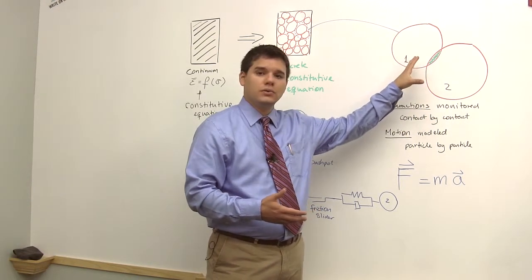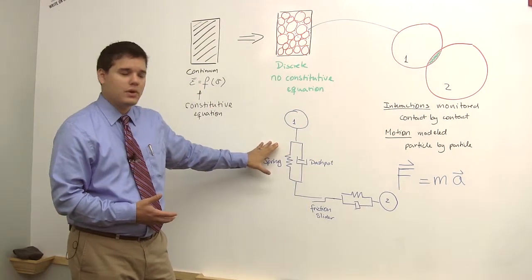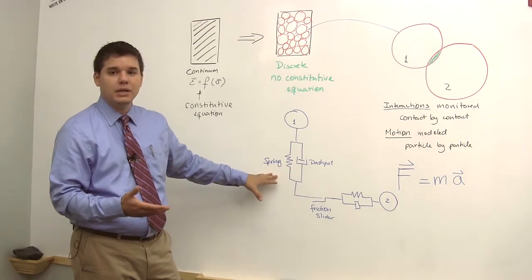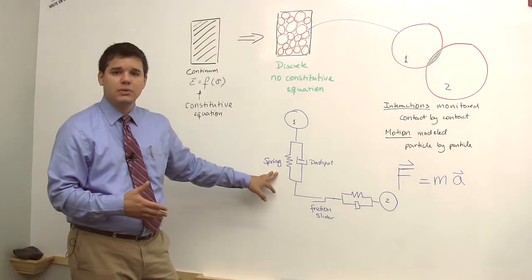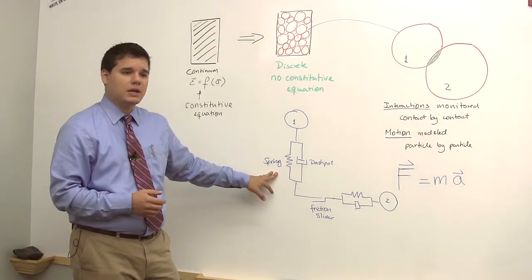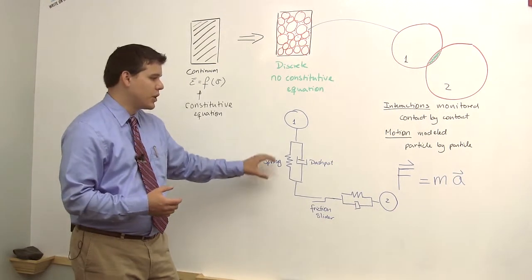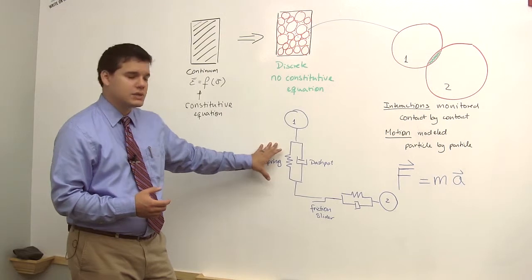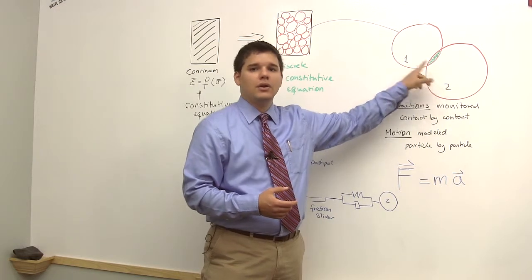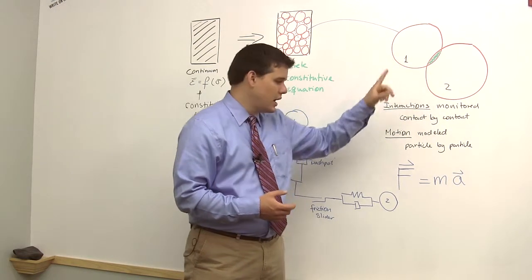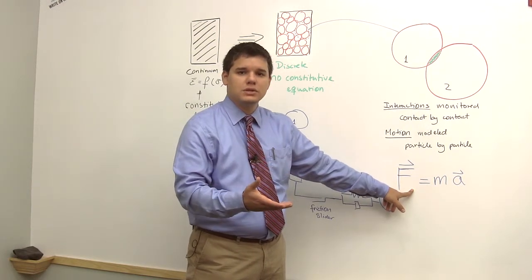The forces applied to each particle are modeled usually by a set of springs and dashpots. These springs and dashpots can take many different shapes — it could be a linear spring, it could be a non-linear spring, or it could be a hysteretic spring where it has a different stiffness on the loading versus unloading phase. Ultimately, all we're doing is measuring the forces applied to particle one by particle two and walls interacting with it, and using Newton's second law of motion to model its new position and new acceleration.